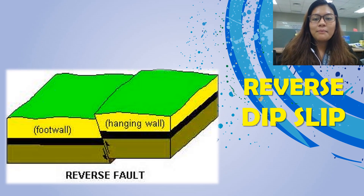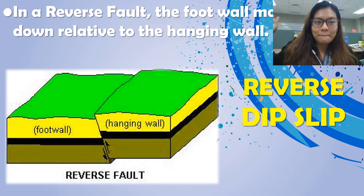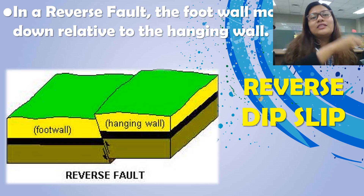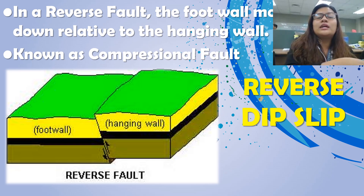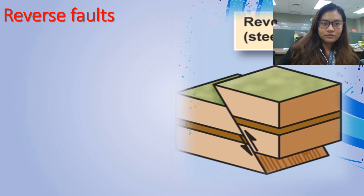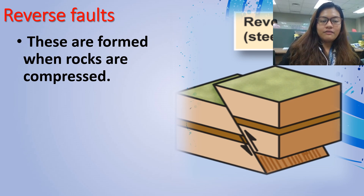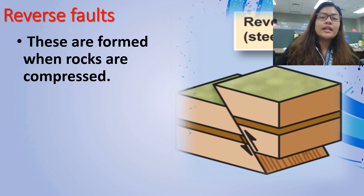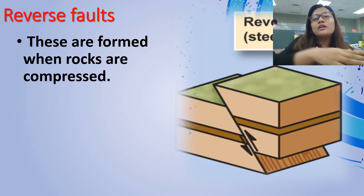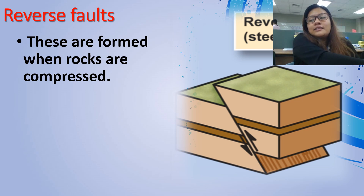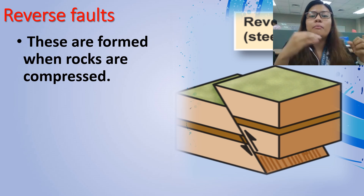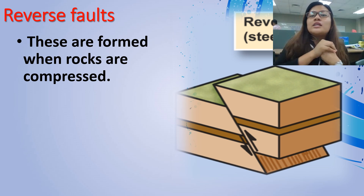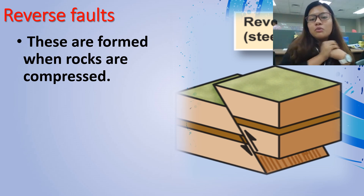As we talk about the reverse dip-slip: in reverse fault, the foot wall moves down relative to the hanging wall and it is also known as compressional fault. Reverse faults form when rocks are actually compressed. So technically, when you say reverse, it's not just that the hanging wall is going up — the rocks are being compressed against one another, causing the hanging wall to actually move up.